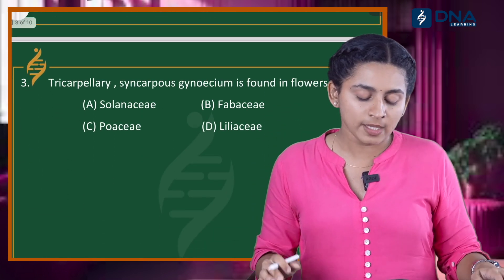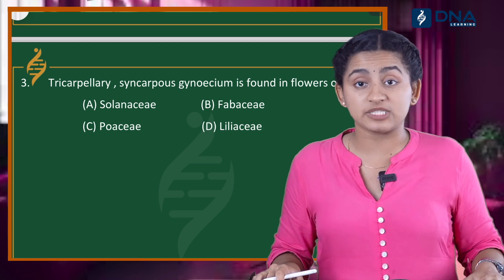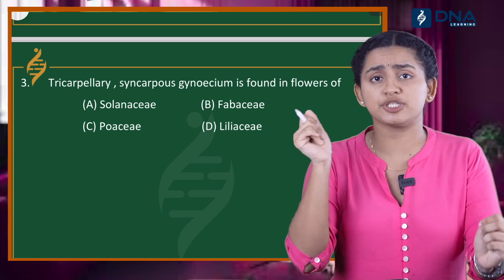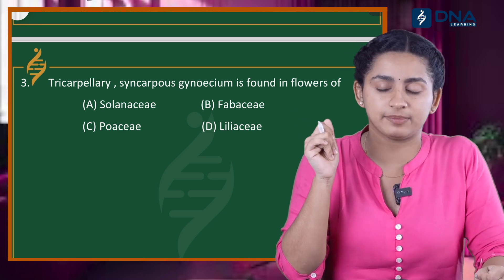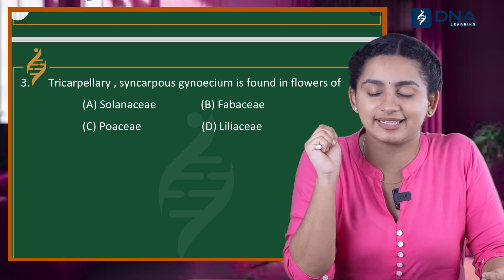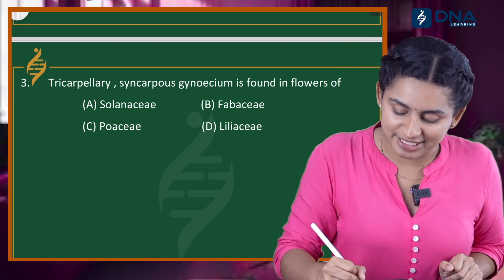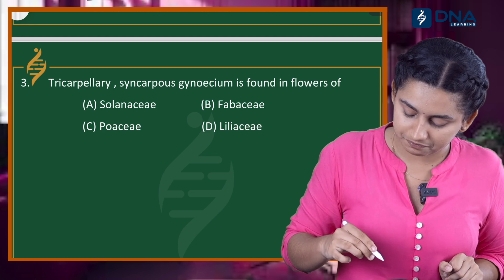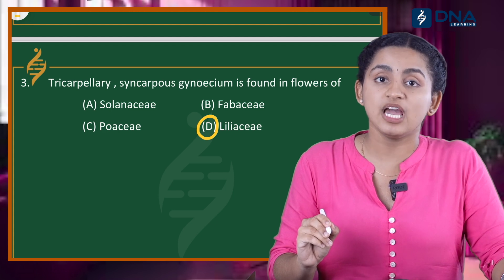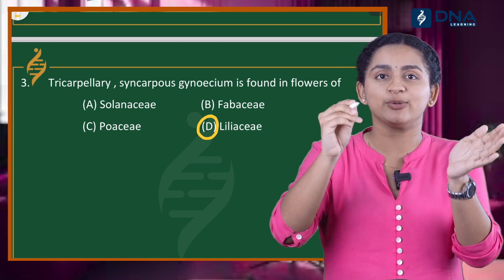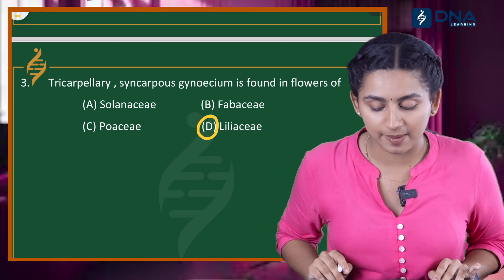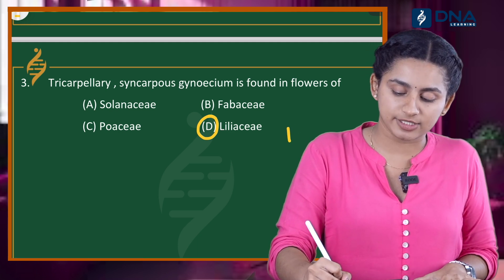Our next question is question number 3. Tricarpellary syncarpous gynoecium is found in the flowers of which family? This is very important. The order of carpel numbers: Fabaceae has 1 (monocarpellary), Solanaceae has 2 (bicarpellary), and Liliaceae has 3 (tricarpellary). So, tricarpellary syncarpous gynoecium is found in the flowers of Liliaceae. Option B is our right answer.